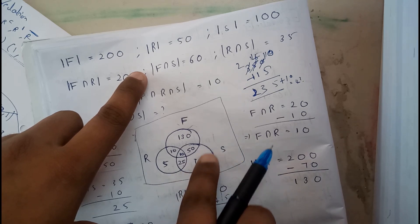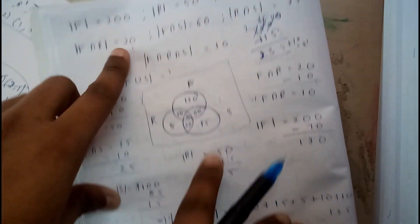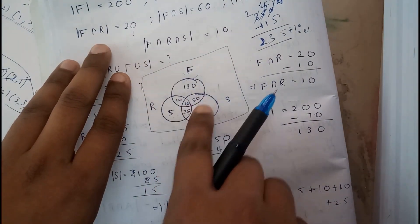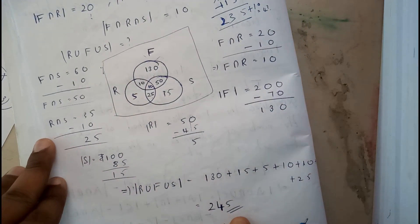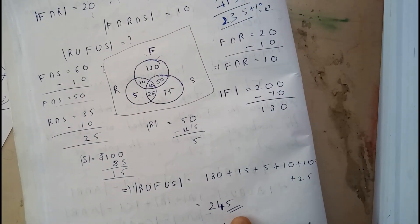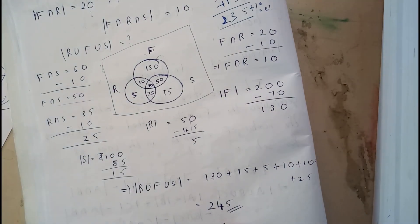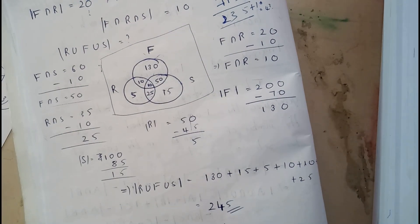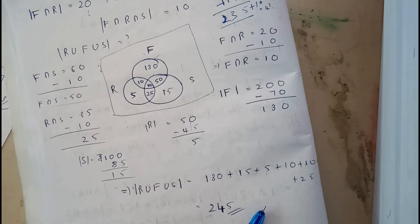Now I think you are clear with that. By adding all these values: 130 plus 10 plus 10 plus 10 plus 50 plus 5 plus 25 plus 15 is 245. Using this, you can count the number of students. Even if the question is any typical question, you can just solve it using this Venn diagram. I hope everyone understood about this. Thank you, thanks for watching.